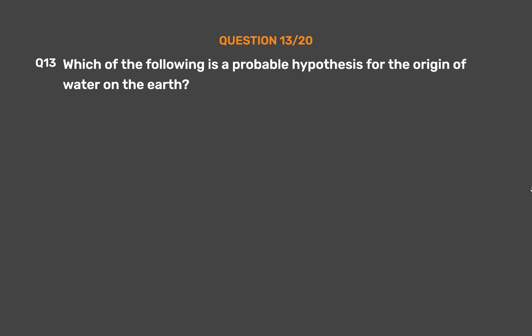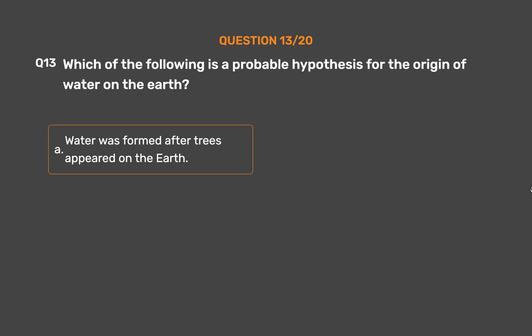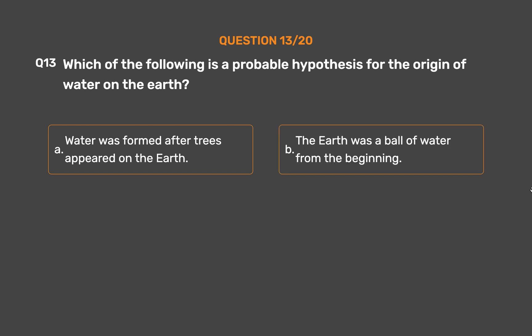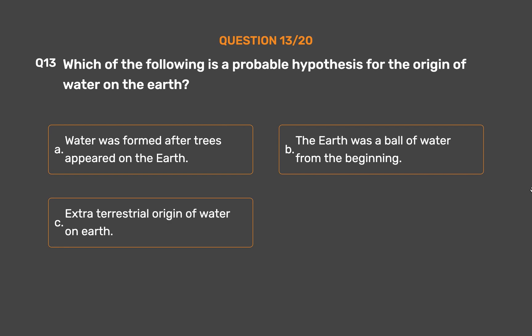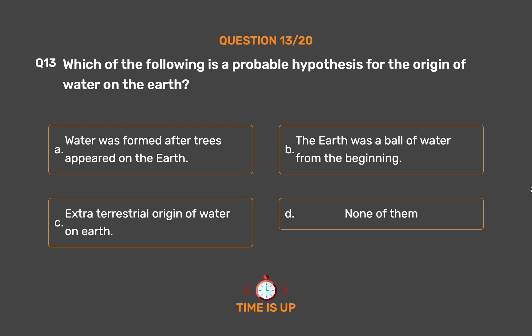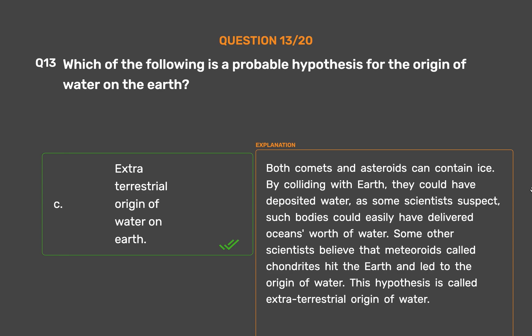Question number 13. Which of the following is a probable hypothesis for the origin of water on the earth? Option A: Water was formed after trees appeared on the earth. Option B: The earth was a ball of water from the beginning. Option C: Extra-terrestrial origin of water on earth. Option D: None of them. The correct answer is Option C: Extra-terrestrial origin of water on earth. Both comets and asteroids can contain ice; by colliding with earth, they could have deposited water — such bodies could easily have delivered oceans' worth of water. Some scientists believe that meteoroids called chondrites hit the earth and led to the origin of water. This hypothesis is called extraterrestrial origin of water.